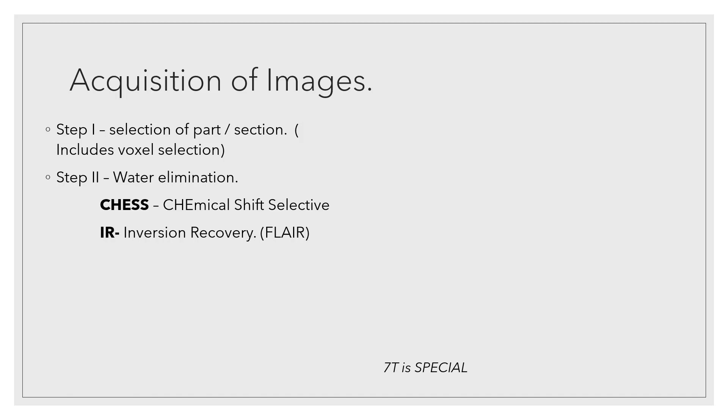Step two is water elimination. For that we have two techniques: one is called CHESS, which is chemical shift selective technique, and the other one is very commonly used IR or inversion recovery - in brain it is FLAIR. Step three is acquisition.